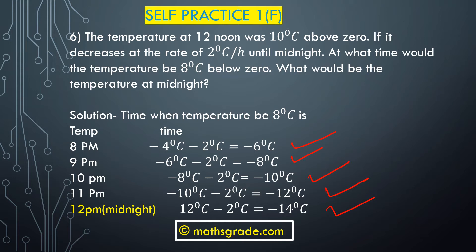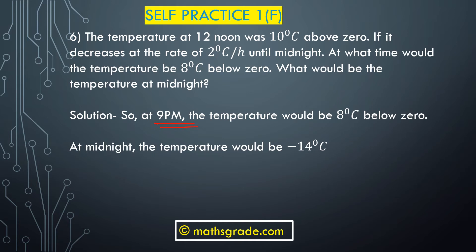So the answers for question 6: the temperature will be minus 8 degrees Celsius below 0 at 9 PM. And the temperature at midnight would be minus 14 degrees Celsius.